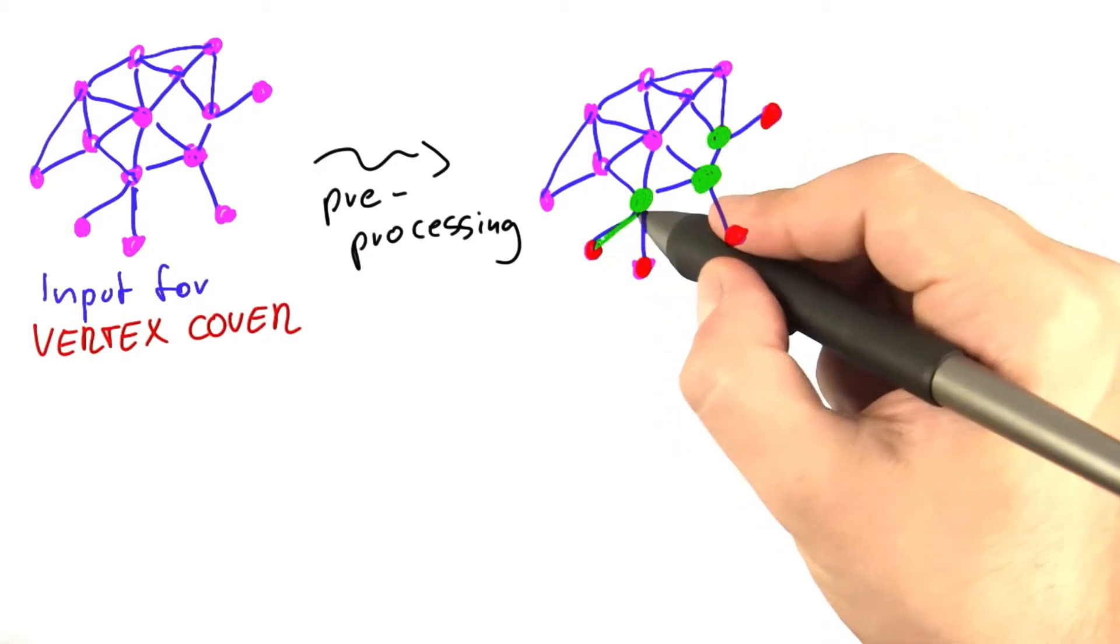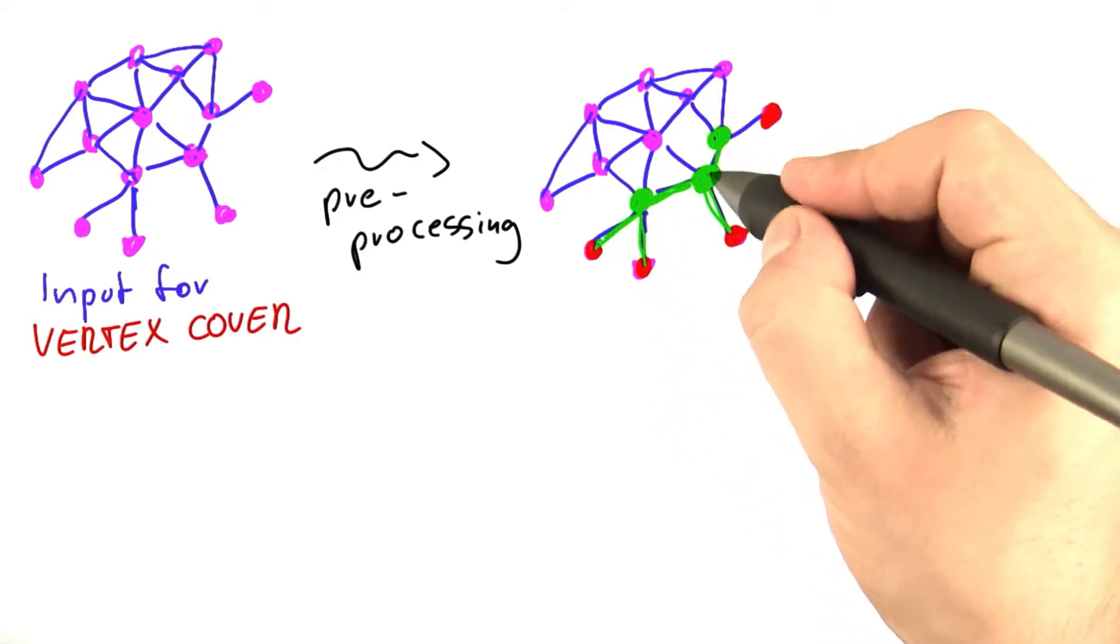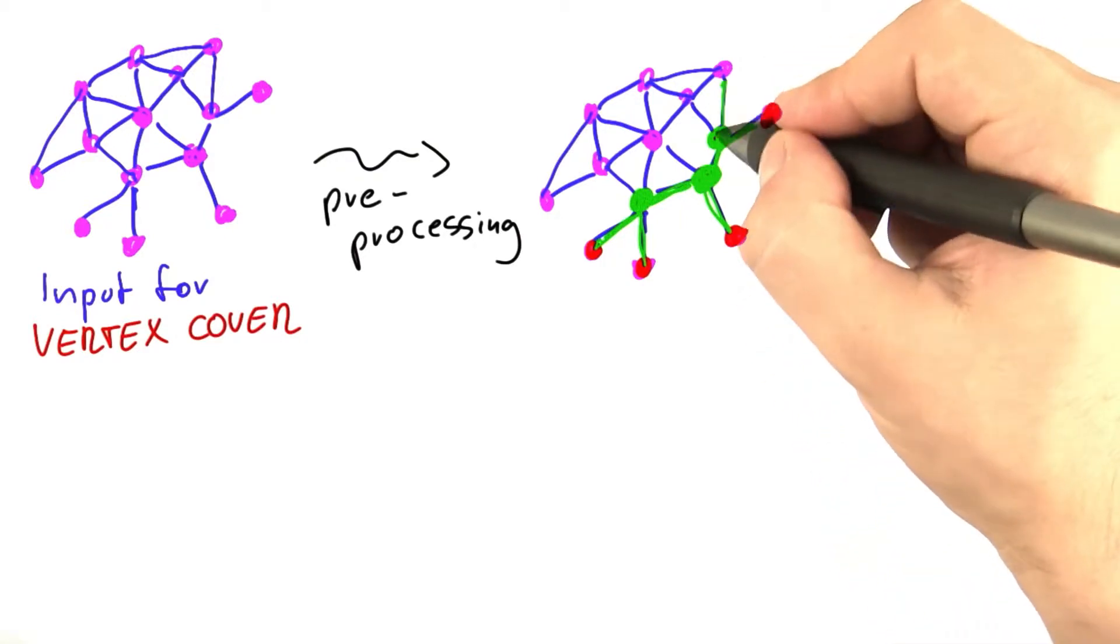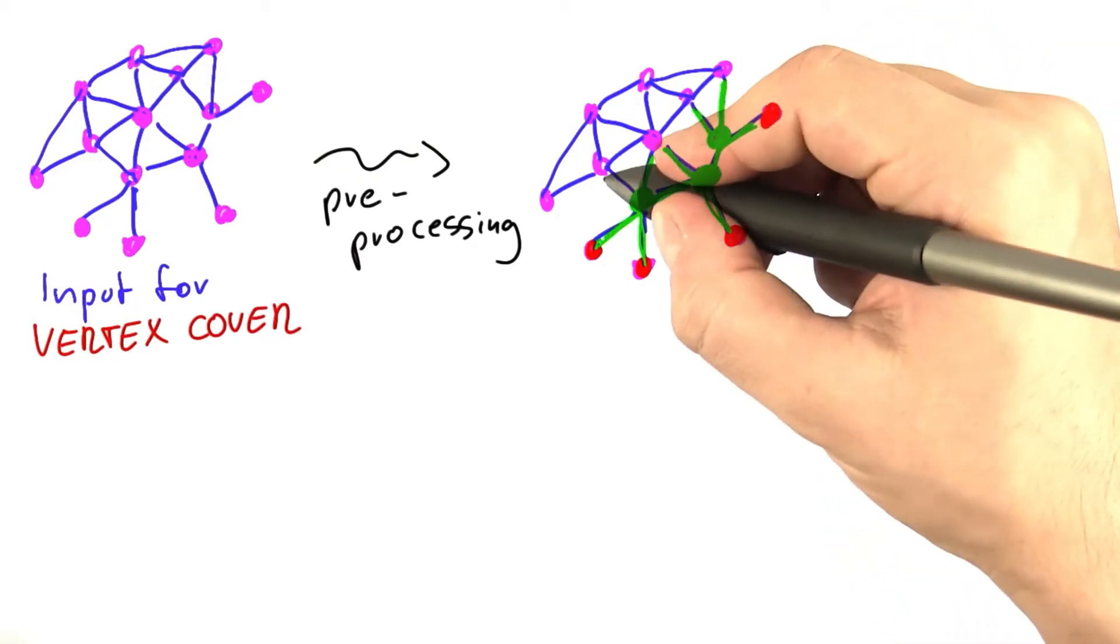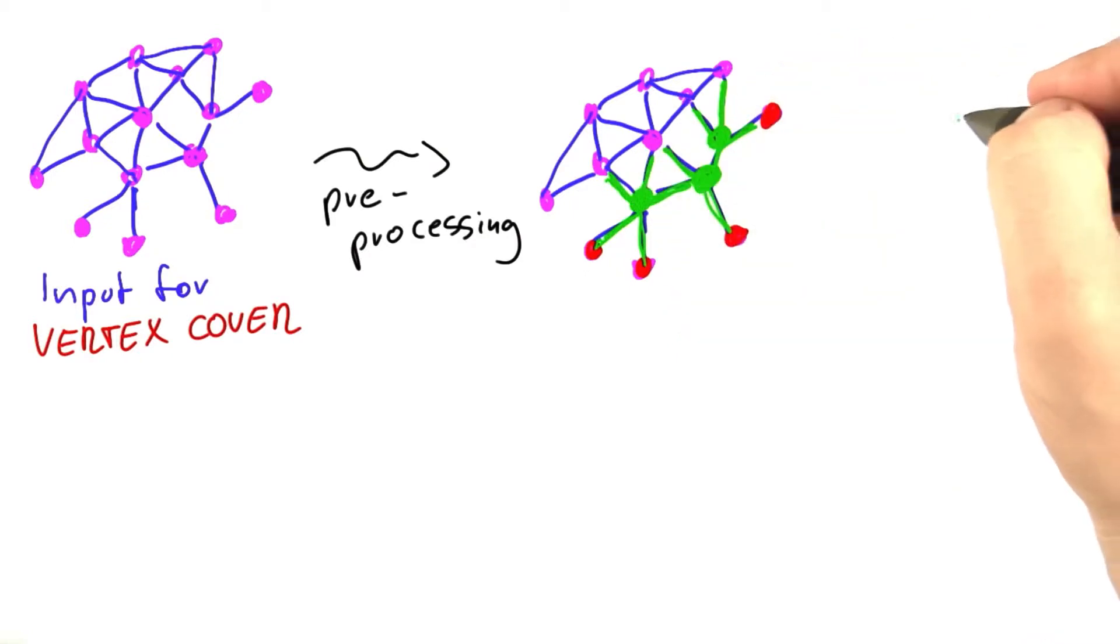And this, of course, is dramatically effective in this case here. It's unfortunately not always the case in practice, but as you can see, it only leaves a very small part of the network actually where we have to find an assignment.